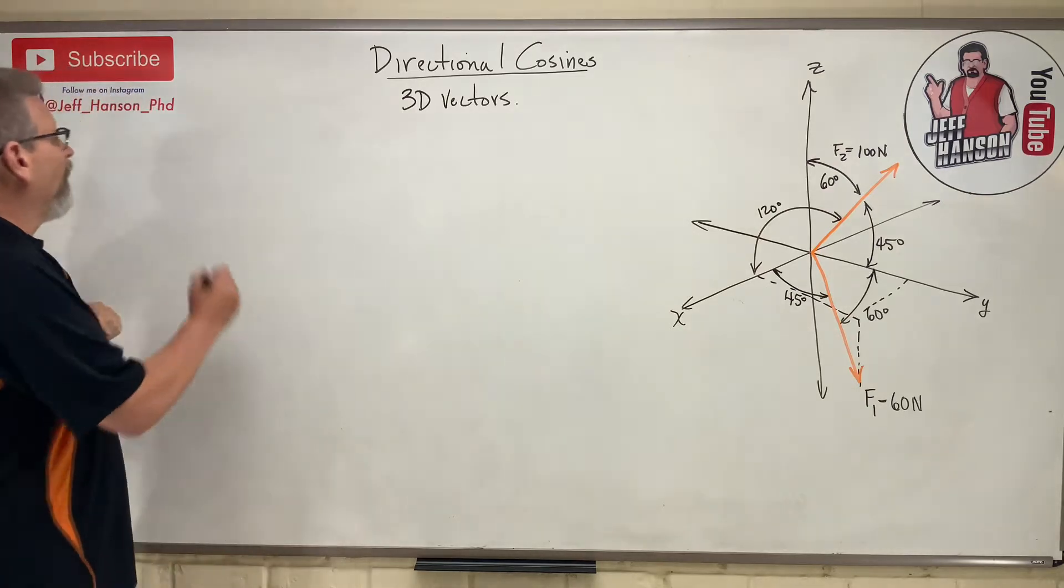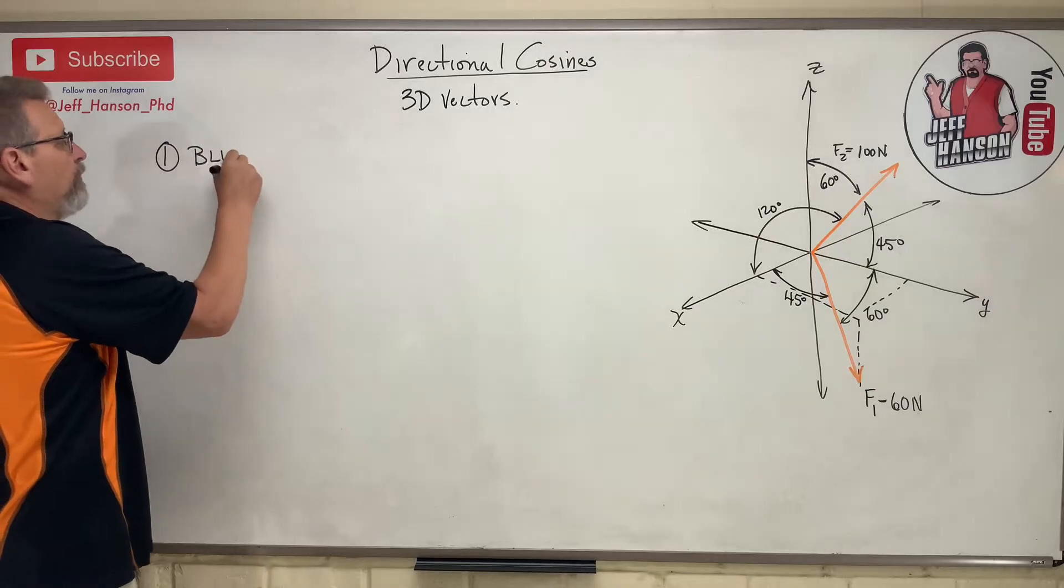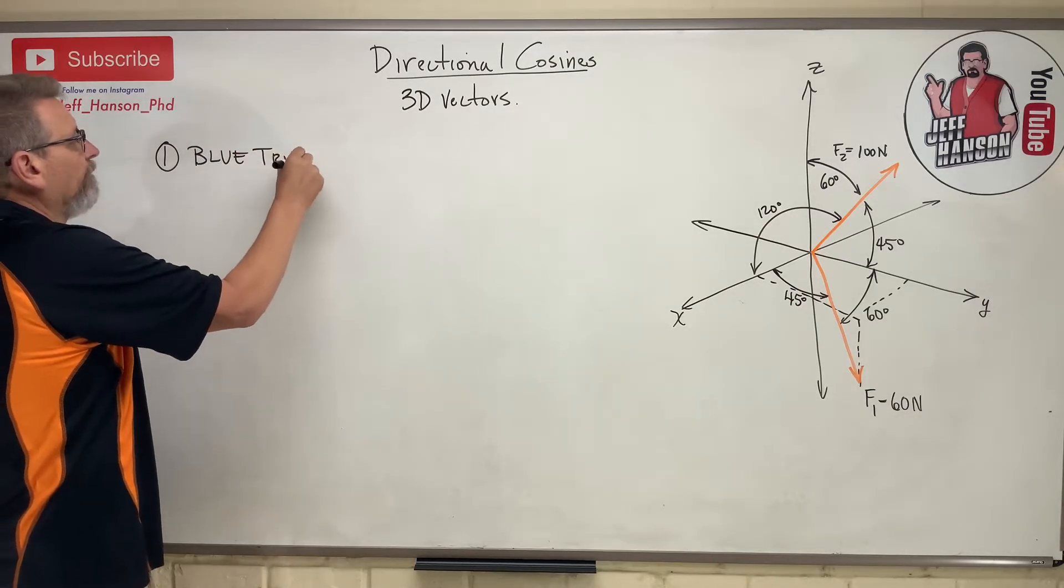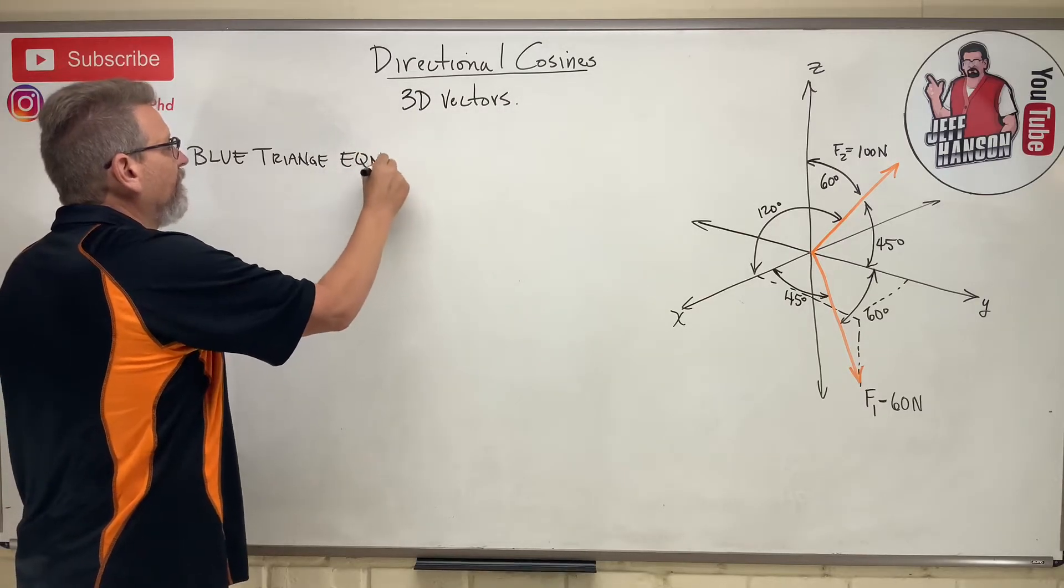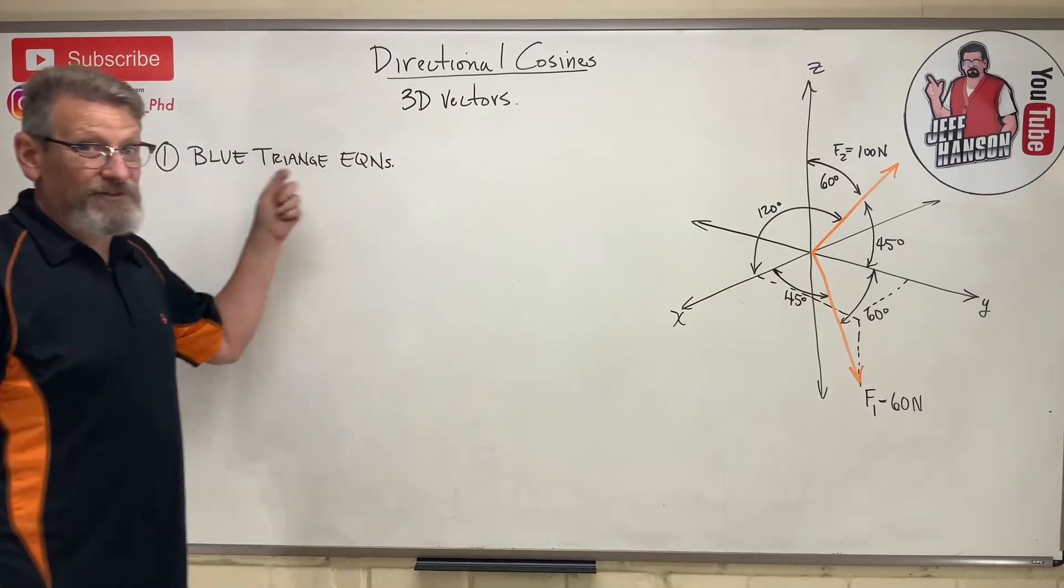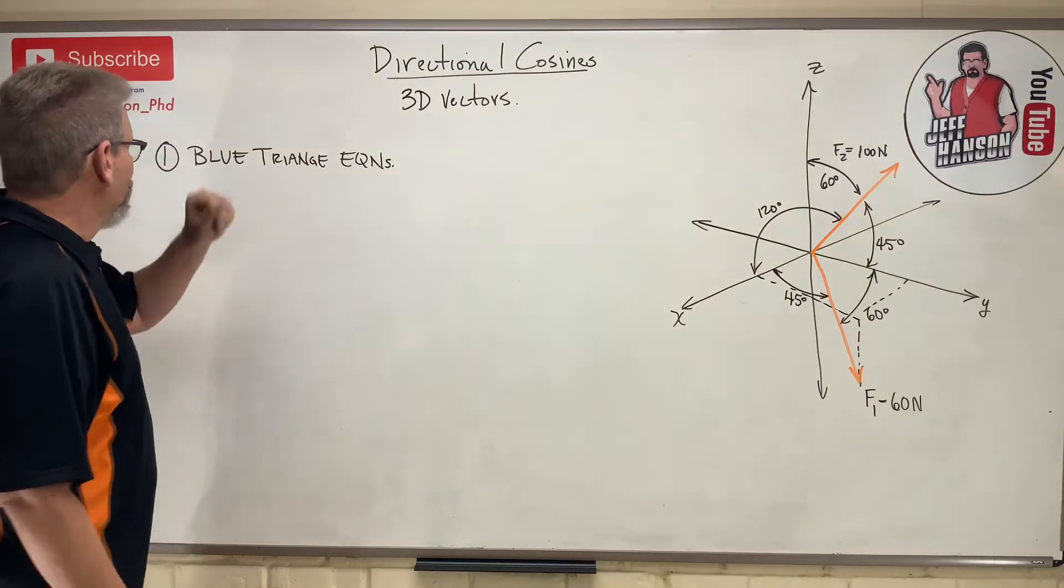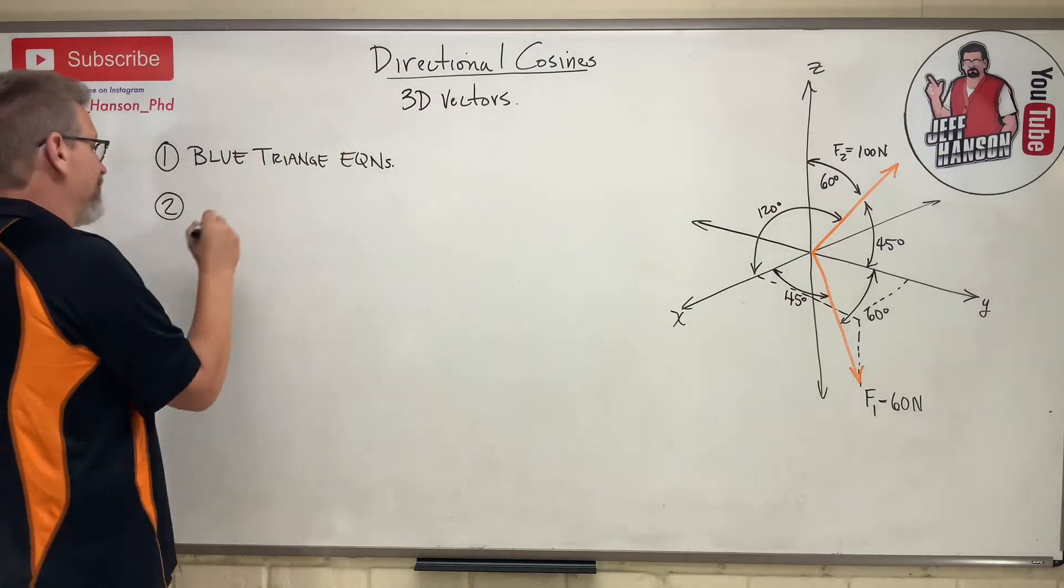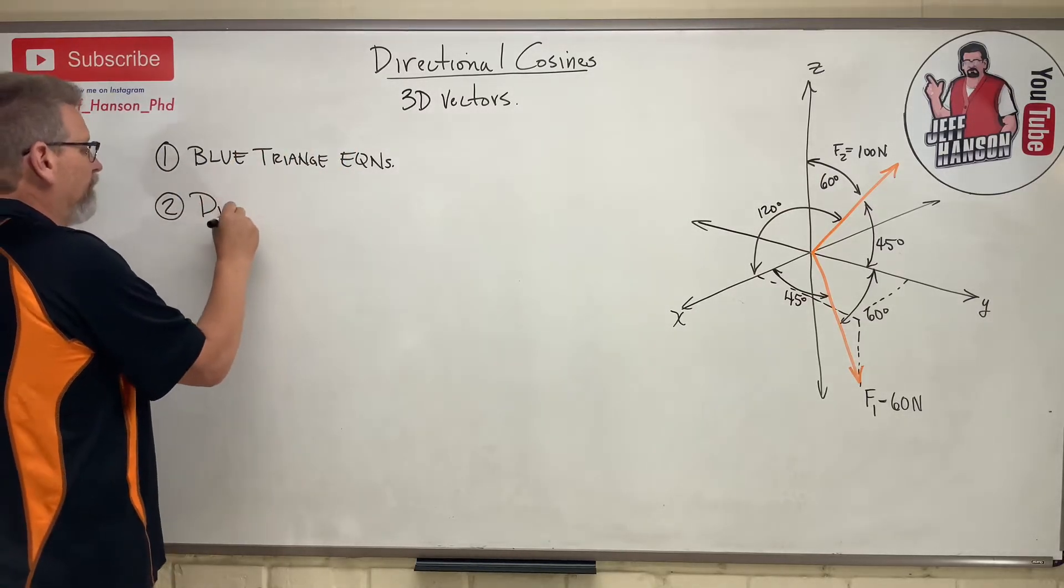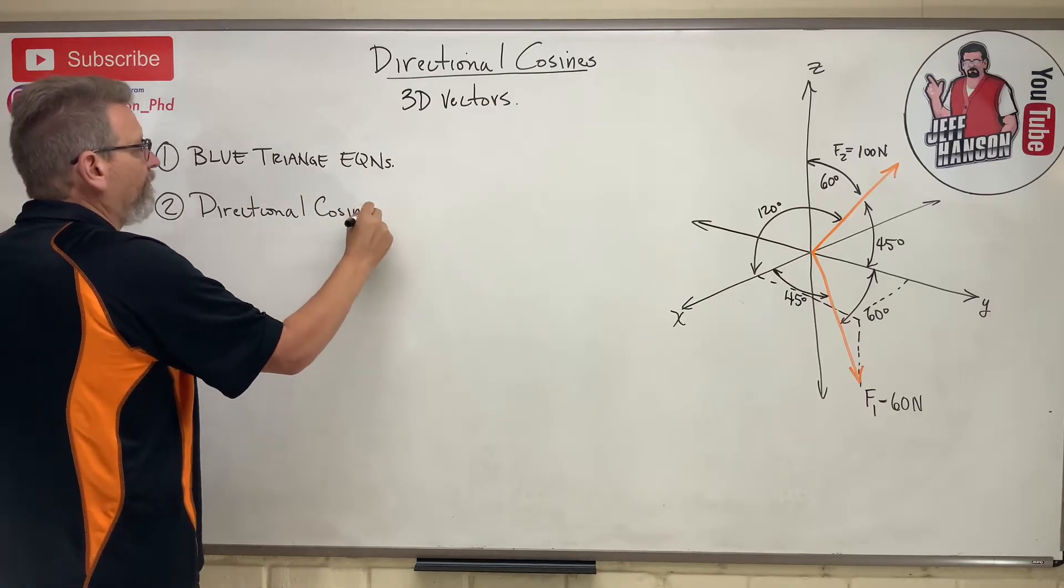We already talked about way number one, which was blue triangle equations, right? Let's go check out the last two videos to see where that came from. Number two is this guy, directional cosines.